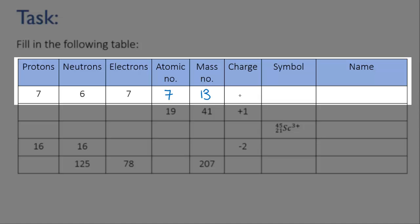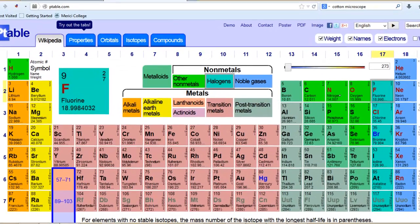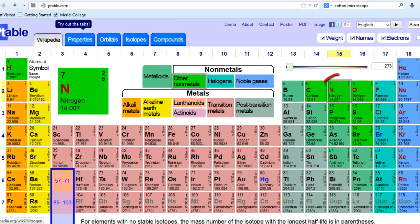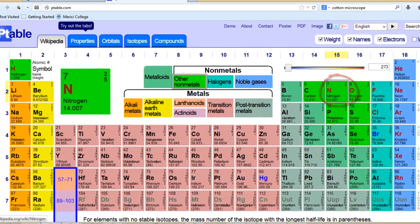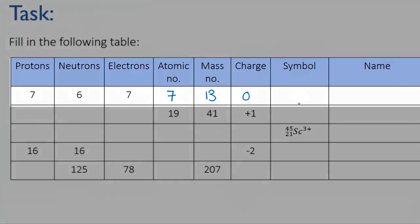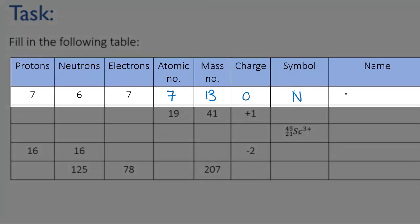The charge is the positive charge from the protons plus the negative charge from the electrons, which is going to be seven minus seven, which is zero. So this is a neutral atom. We need to look up the name and symbol — the atomic number is seven, so we go to the periodic table and find that it's nitrogen, symbol N.